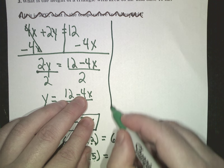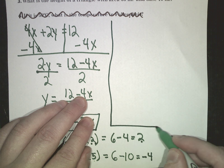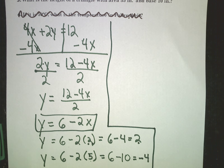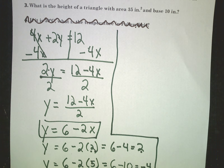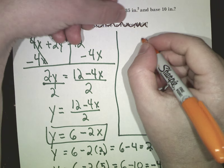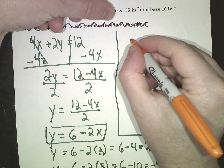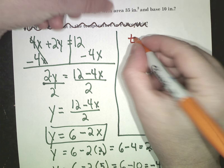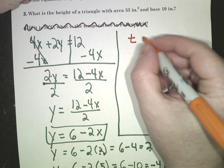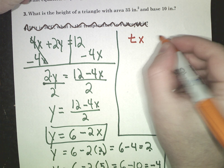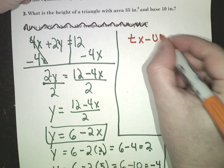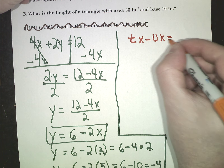So let's cross this out and move to the next part. This one reminds me of the last problem — it's pretty much the same thing, just using different letters. This one says solve for x: Tx minus ux equals v.